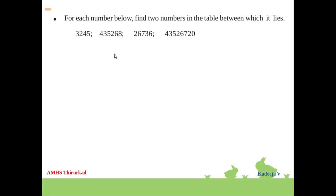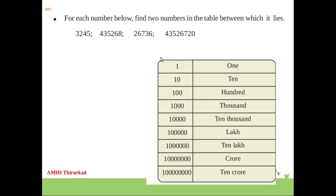Then you can write these questions and answers to the following. For each number below, find two numbers in the table between which it lies. There are three numbers in the questions. Question number 1 is 3,245. How do we find it? How many digits in 3,245? 4 digits.